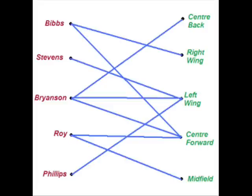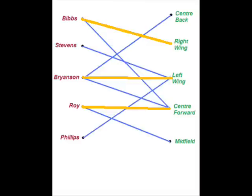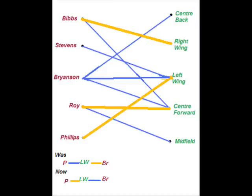This bipartite graph shows which players can play in which position and we start off with an initial matching here. We're going to try and match Phillips onto this. Phillips starts off playing left wing. We're going to change Phillips' blue to an orange. That means we now can't play Bryanson on the left wing, so Bryanson is taken off the left wing and we're going to replace Bryanson from the left wing with centre back.